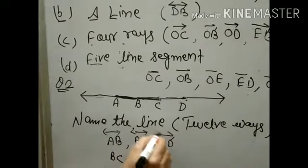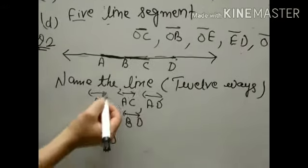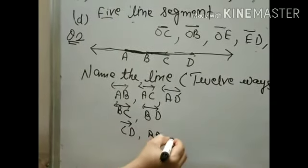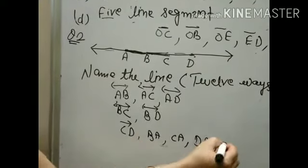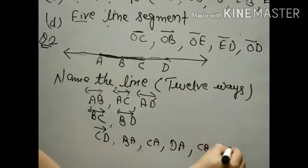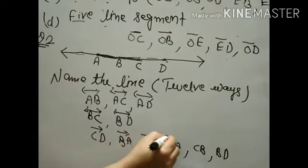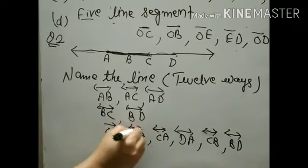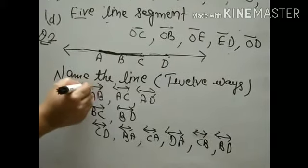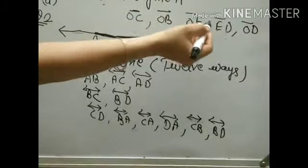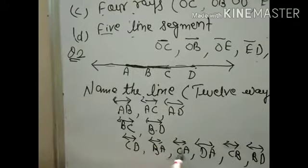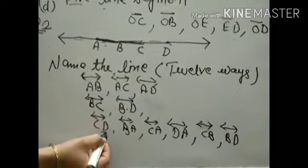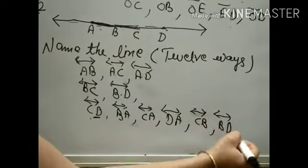Six ways written in simple direct form. Now reverse them — where I wrote AB, reverse it to BA. You can write BA as well. Reverse AC to get CA. Reverse AD to get DA. Reverse BC to get CB. Reverse BD to get DB. So the 6 ways reversed give another 6. Total together: 12 ways to represent the line. Make the proper line symbol — both sides have arrows for a line. If only one arrow, it is a ray; if no arrow, it is a line segment. Count: 1 through 12 — these are 12 ways. CD reversed gives DC, making total 12.